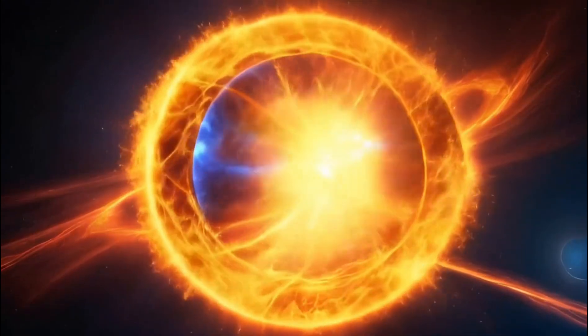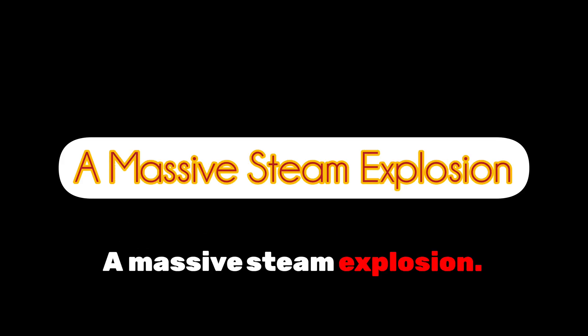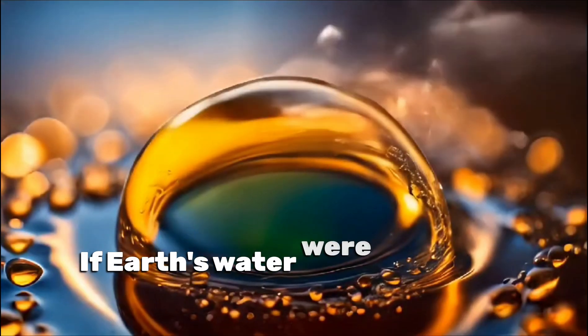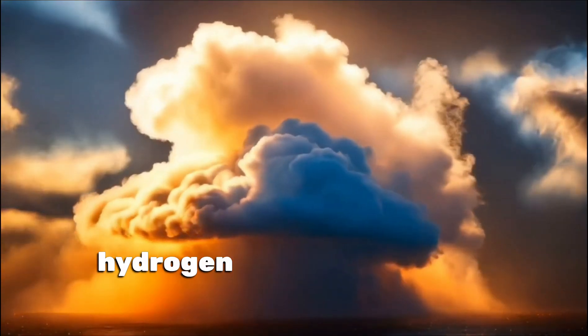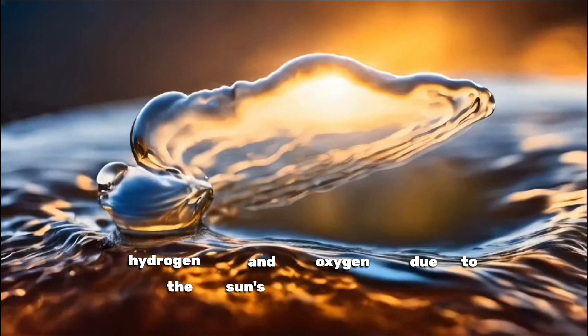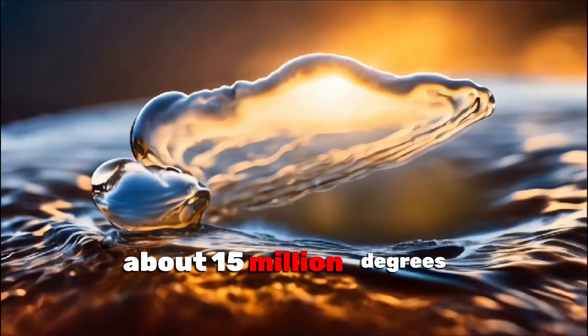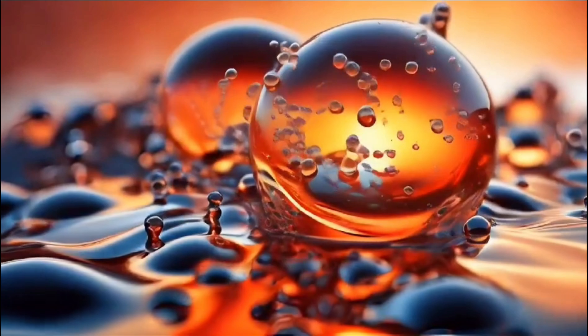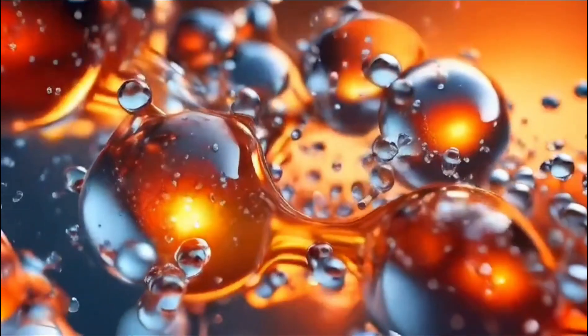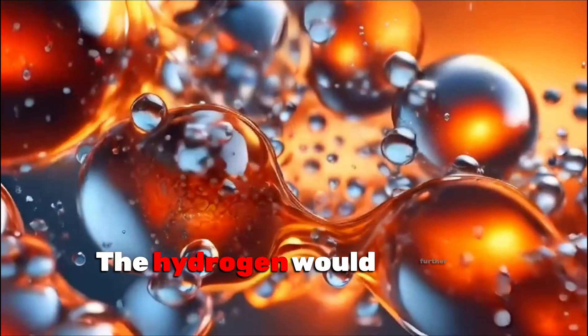A massive steam explosion. If Earth's water were suddenly dumped onto the Sun, it would immediately be broken down into hydrogen and oxygen due to the Sun's extreme heat, about 15 million degrees Celsius at its core and 5,500 degrees Celsius on its surface. The hydrogen would further fuel